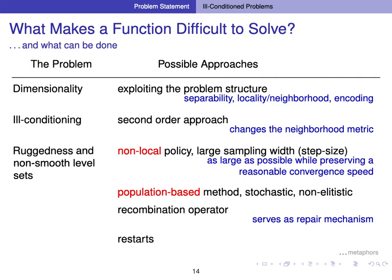To summarize, what makes a function difficult to solve: one difficulty is dimensionality and related separability or non-separability, and the main approach is to exploit the problem structure. If the function is separable we can exploit separability; otherwise we exploit locality or neighborhood via encoding or the search algorithm itself. The second class of difficulty is ill-conditioning, where the typical approach is a second-order approach that changes the neighborhood metric. The third difficulty is ruggedness or non-smoothness, which requires a non-local search policy with as large a step size as possible — in particular with population-based, stochastic, and non-elitist approaches.